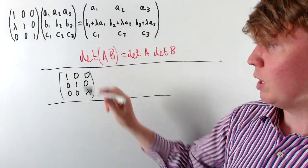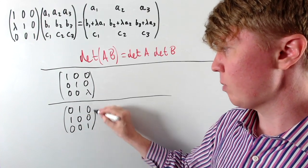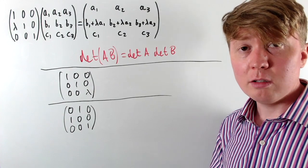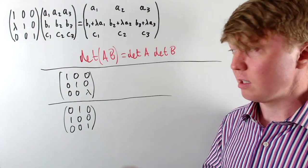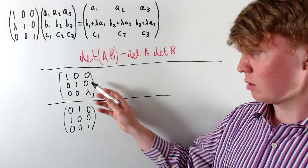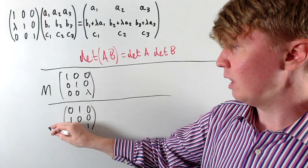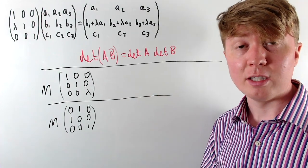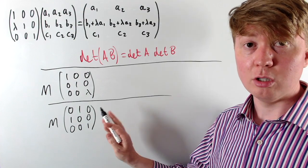For a row exchange, swapping the top and middle rows corresponds to multiplying by a matrix like the identity but with 0,1 and 1,0 in the top-left 2x2 block. This puts second-row elements into the top row and top-row elements into the middle row. These structures generalize nicely to 4x4 or MxN matrices. Multiplying by these matrices on the right instead of the left gives the corresponding elementary column operations — for example, swapping the first and second columns instead of rows.